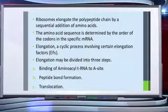This slide shows the summary of the elongation process. Ribosomes elongate the polypeptide chain, and the amino acid sequence is determined by the order of codons in the specific mRNA. It is a cyclic process involving certain elongation factors and can be divided into three steps: binding of aminoacyl-tRNA, peptide bond formation, and translocation.